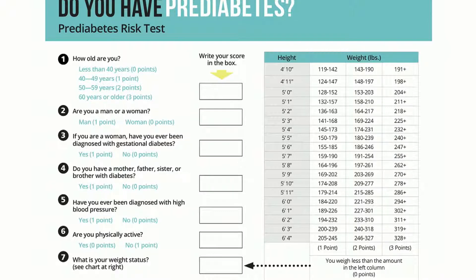Question four: do you have a mother, father, sister, or brother with diabetes? That would be the family history link — one point for yes and zero points for no. Question five: have you ever been diagnosed with high blood pressure? Give yourself one point for yes and zero points for no.